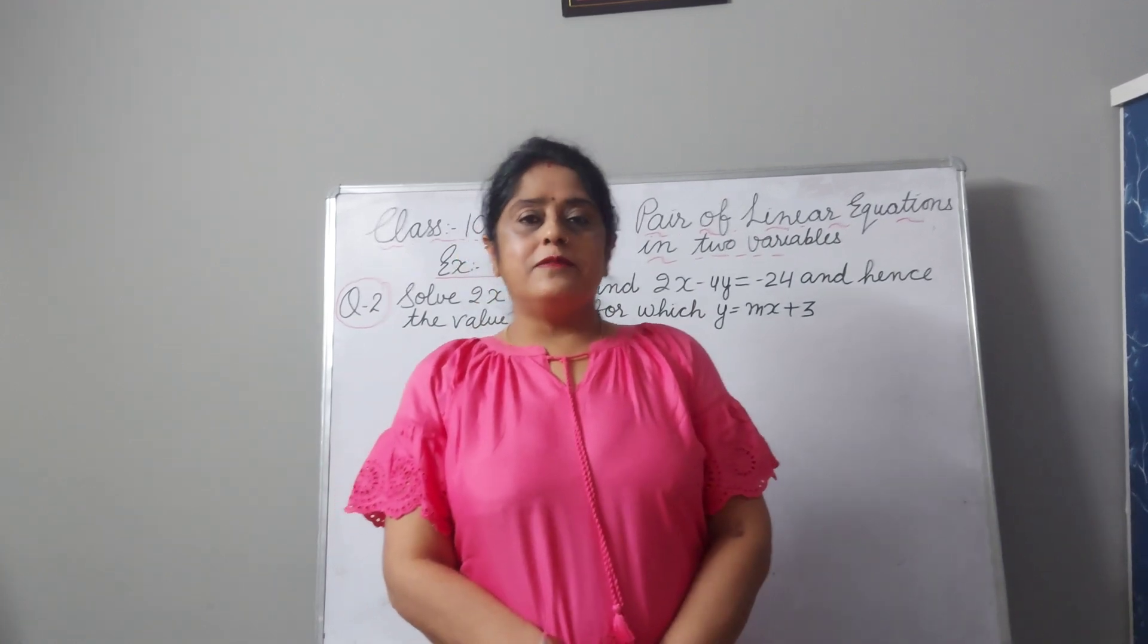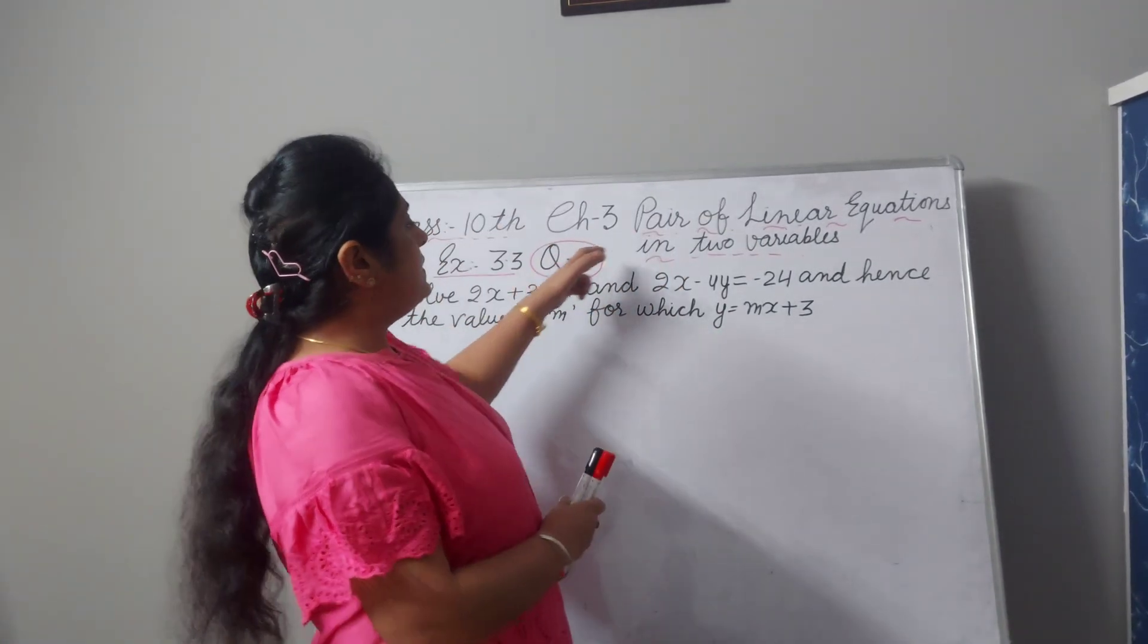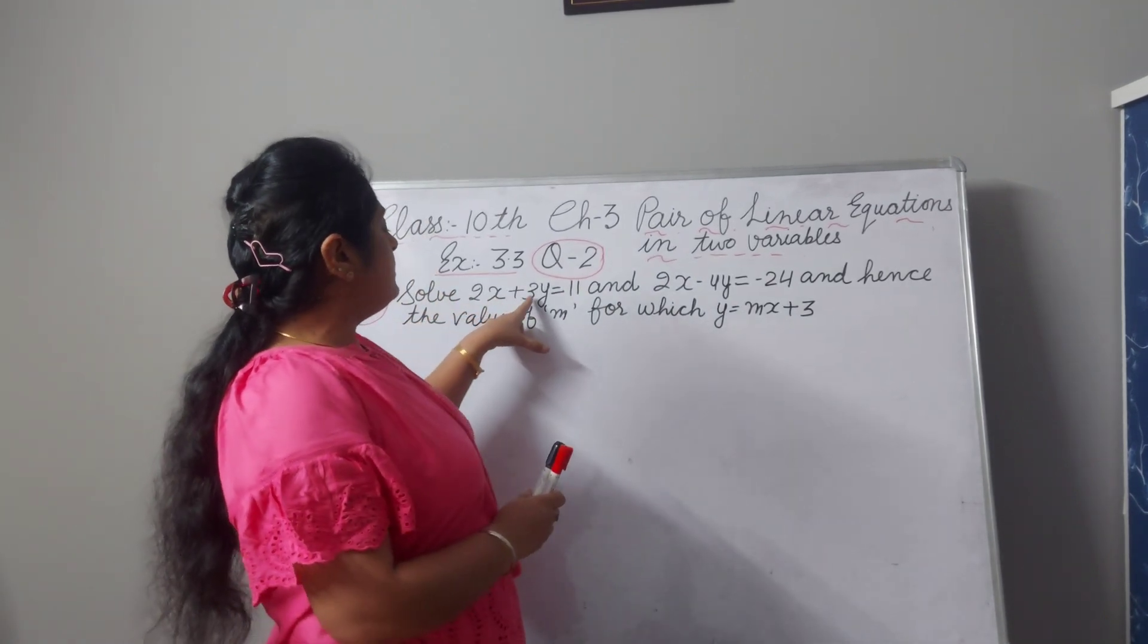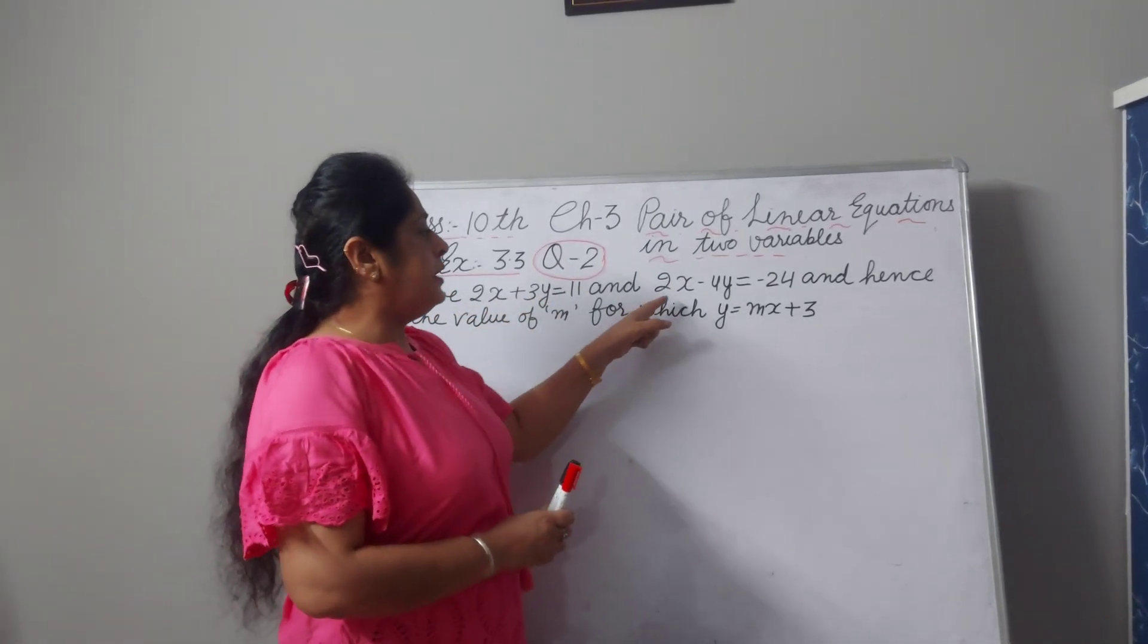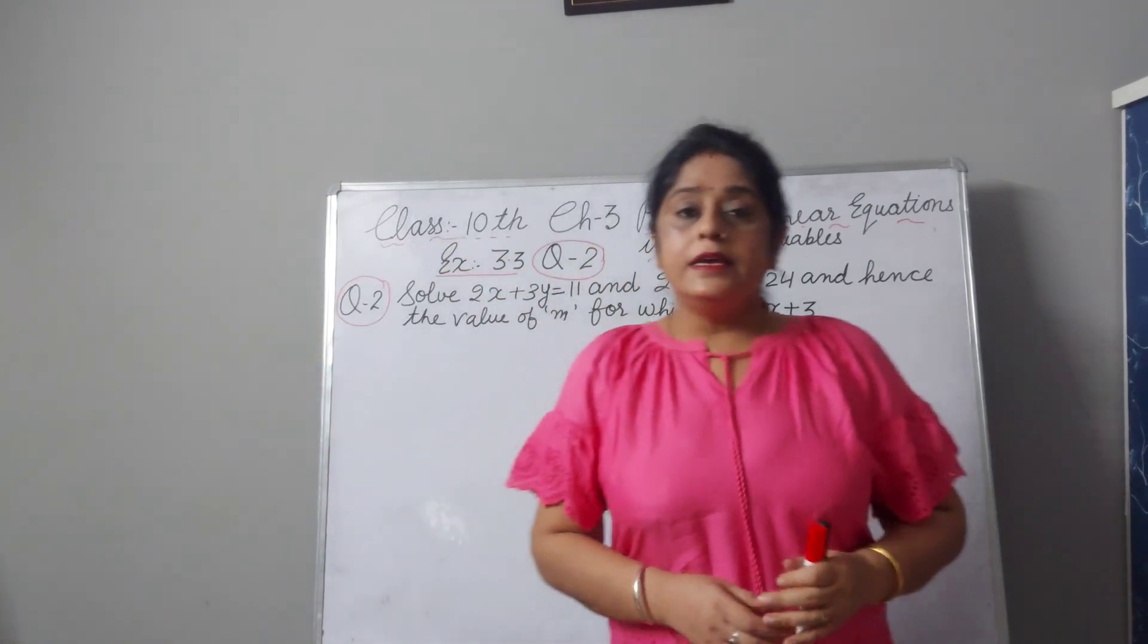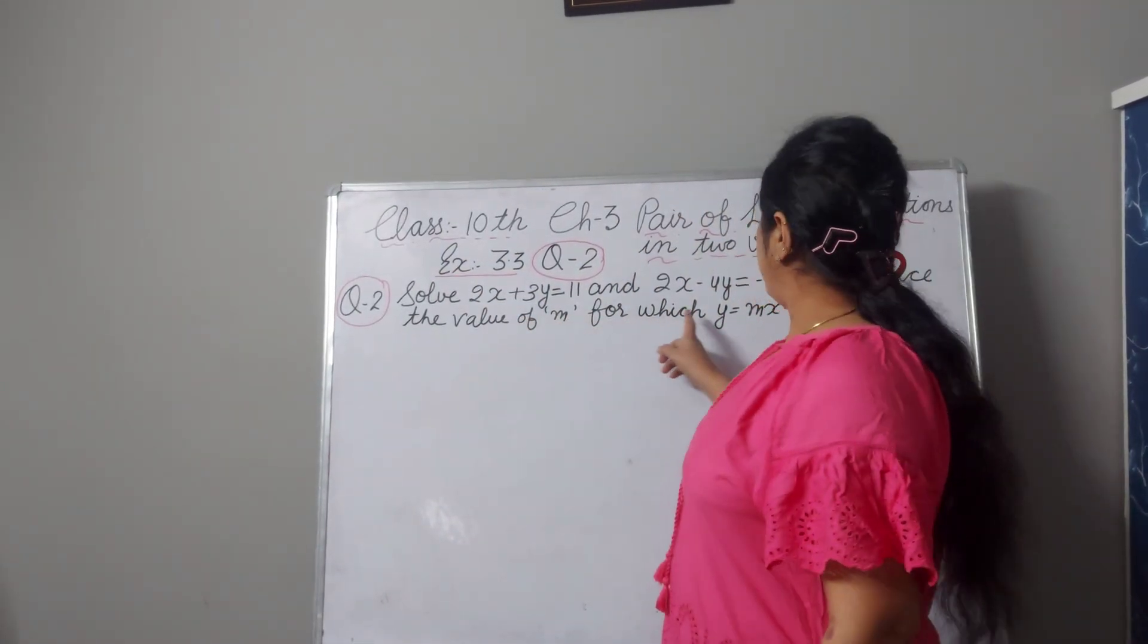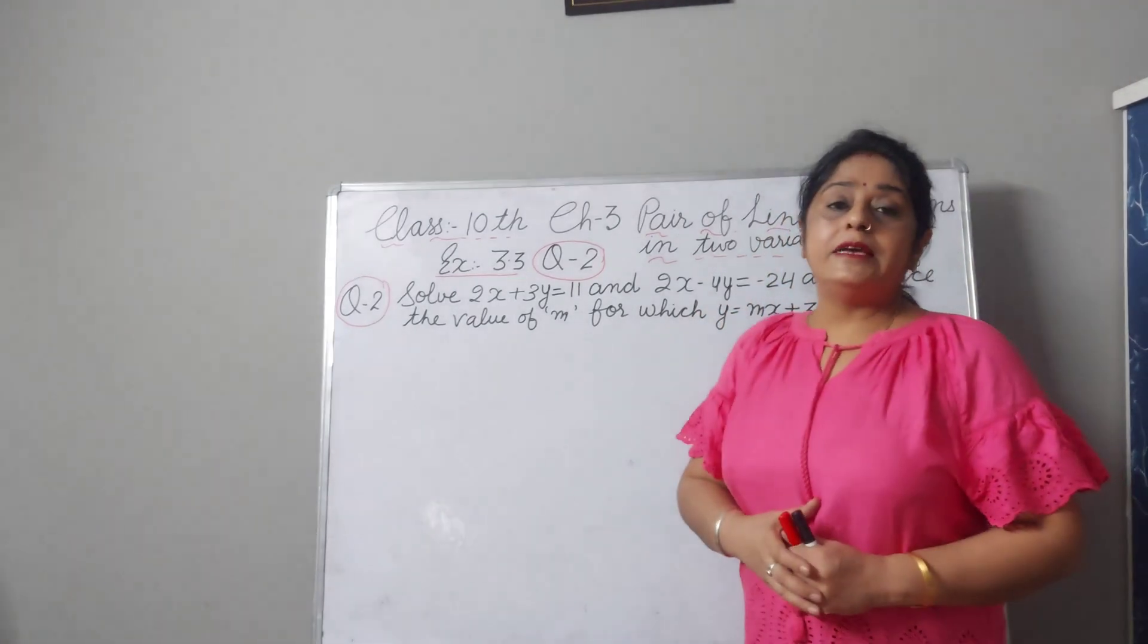In previous sum, we have done substitution method. Here is not written substitution method, but here is written, solve 2x plus 3y equal to 11 and 2x minus 4y is minus 24 and hence the value of m for which y is equal to mx plus 3.